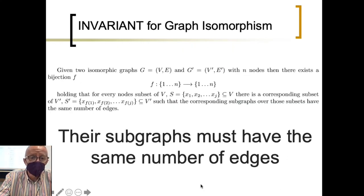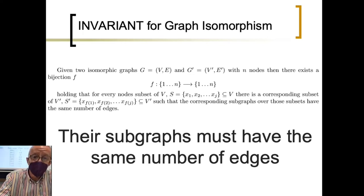Well, first of all, in order to properly deal with that, the invariant we propose is given two isomorphic graphs with n nodes. There exists a bijection in this way, holding that for every node subset, there is a corresponding subset on the other side, such that the corresponding graphs over them meet the same number of edges. It is proved. It is almost immediate to prove that. The f we are looking for is the bijection on the original definition.